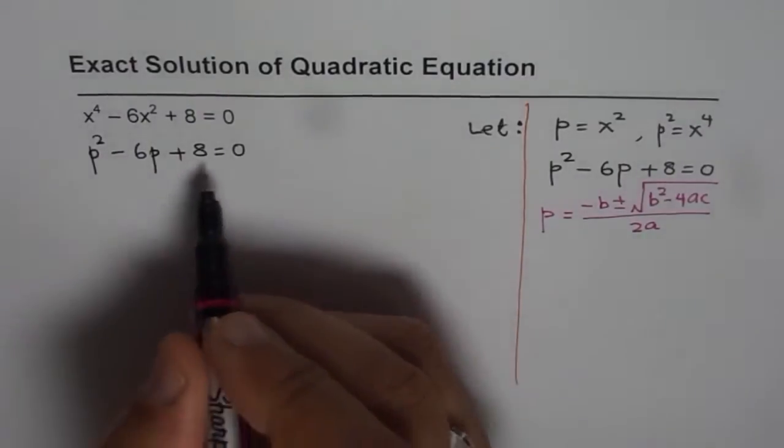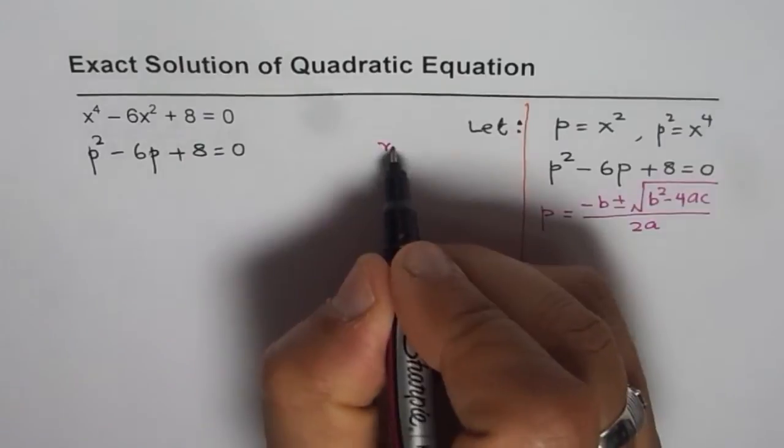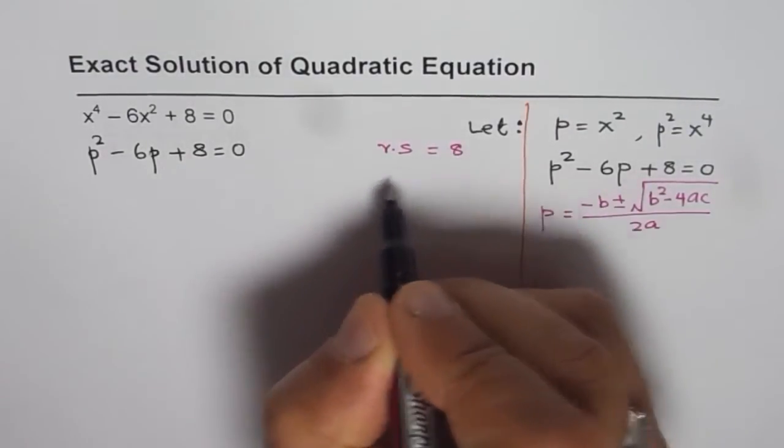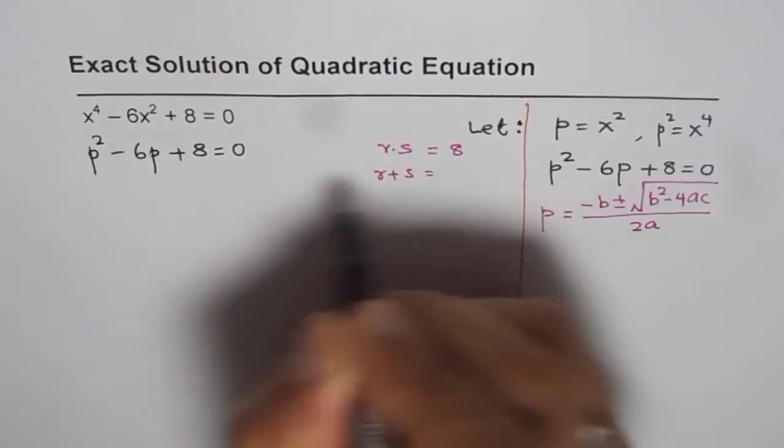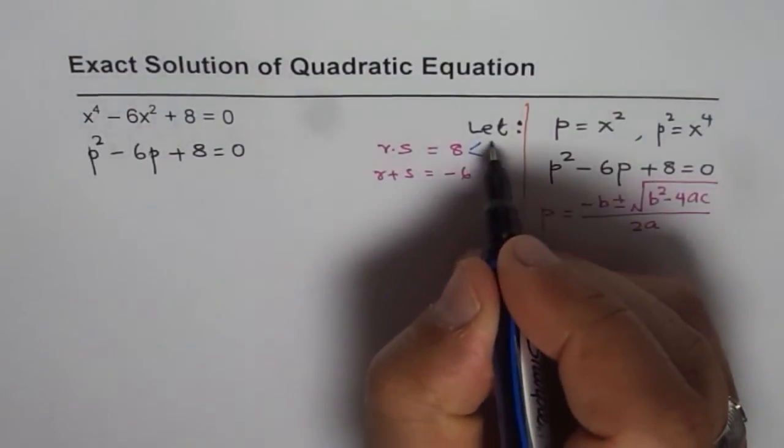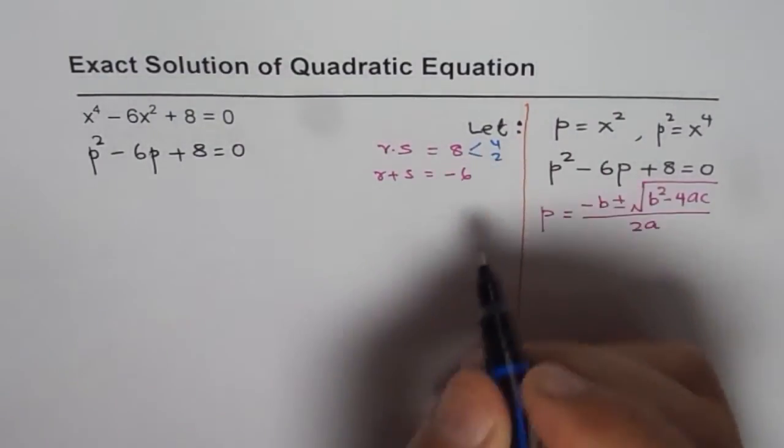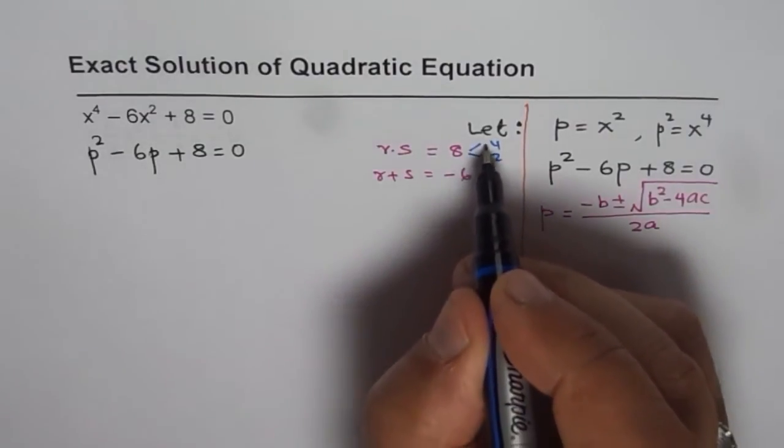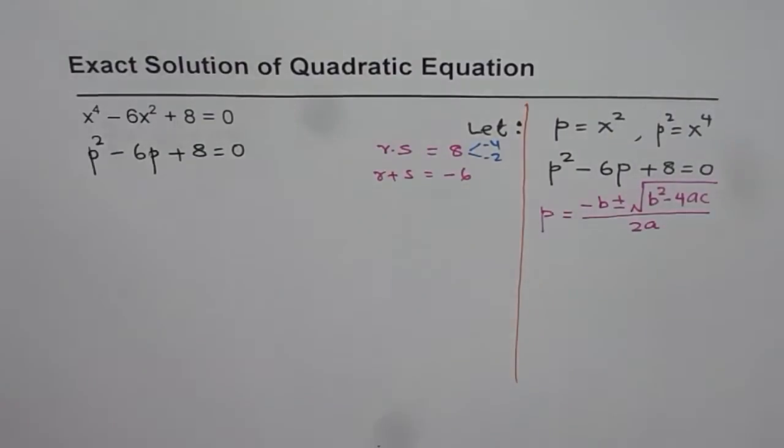We are looking for 2 numbers, r and s, whose product is 8 and r plus s is minus 6. The 2 numbers which could work are 4 and 2. Now, 4 times 2 is 8, and we need sum of minus 6. That means both should be negative. That means we can factor this equation.